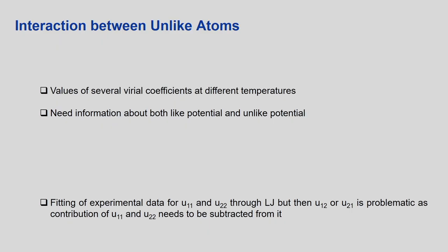For the interaction between unlike atoms, we can write the second virial coefficient for a mixture, B2_mix, which is a function of both mole fractions and temperature. It consists of a double summation over components i and j, with cross terms x_i·x_j·B2_ij(T). For a two-component system this expands to x1²·B2_11 + 2·x1·x2·B2_12 + x2²·B2_22. The left-hand side depends on both composition and temperature, while each B2_ij on the right-hand side depends only on temperature — that is, on the interatomic potential between those two atoms.